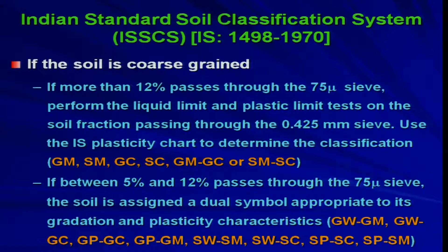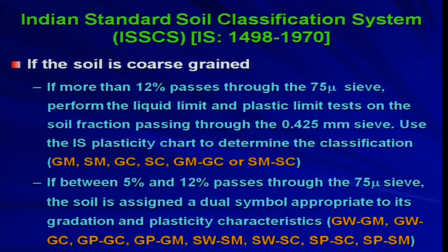If between 5 percent and 12 percent passes through the 75 micron sieve, the soil is assigned a dual symbol appropriate to both its gradation and plasticity characteristics. Neither gradation alone nor plasticity alone dominates the classification process. You will get dual symbols such as GW-GM, GW-GC, GP-GC, GP-GM, SW-SM, SW-SC, SP-SC, or SP-SM.